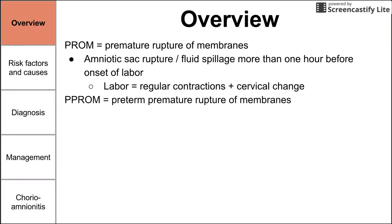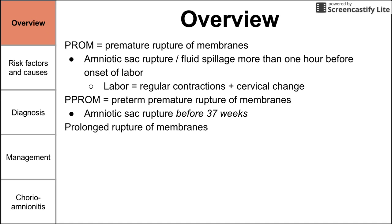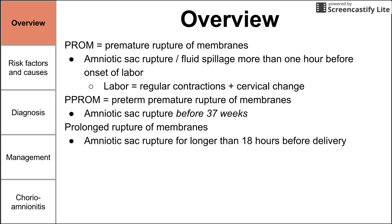PPROM, or preterm premature rupture of membranes, is amniotic sac rupture before 37 weeks. There's also prolonged rupture of membranes, which is amniotic sac rupture for longer than 18 hours before delivery. So if you have premature rupture of membranes more than 18 hours before delivery, that would qualify as both premature and prolonged rupture of membranes.